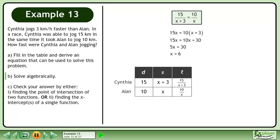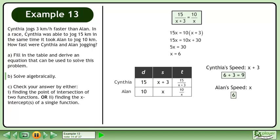Bring back the completed chart from Part A. Cynthia's speed is x plus 3 — plug in 6 for x to get 9. Alan's speed is x — plug in 6 for x to get 6. Cynthia jogs at 9 km per hour and Alan jogs at 6 km per hour.